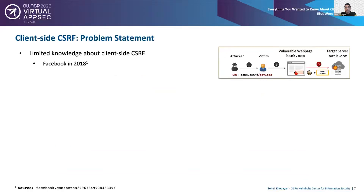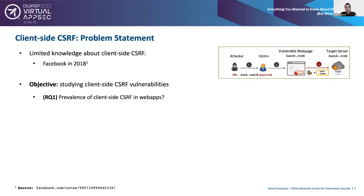Client-side CSRF is very new, with the first instance affecting Facebook in 2018, and our knowledge about this vulnerability is very limited. In this work, our objective is to study it. Specifically, we wanted to quantify its prevalence in web applications, explore different attacker models and exploitation types — such as manipulating the URL, document referrer, or web storage — and understand the degree of attacker control: which fields of a request an attacker can manipulate, including the endpoint, query parameters, domain, and request body.